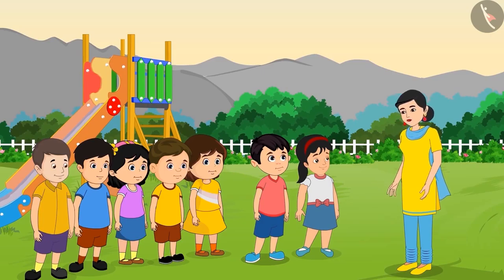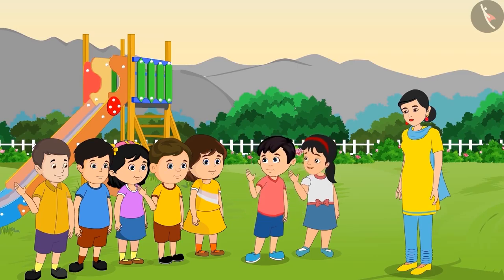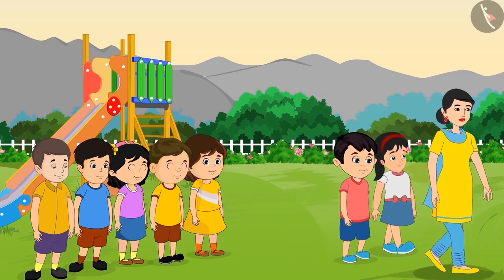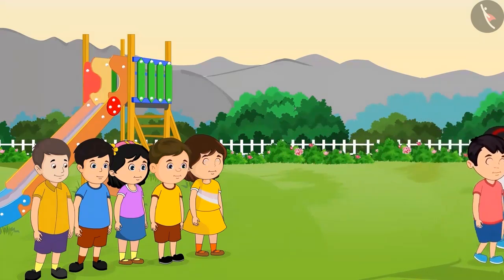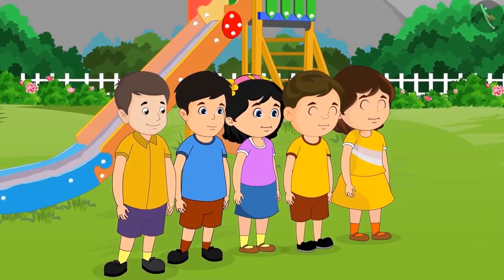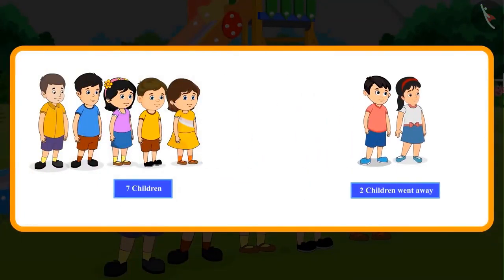Choto and Pinky's mother comes to take them home: 'Choto and Pinky, come let's go home quickly — uncle has come to meet you!' They say: 'Okay, let's go mommy. Bye friends!' Pinky and Choto go back home with their mother. Now can you tell me how many children are left in the park?